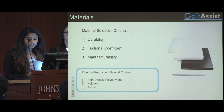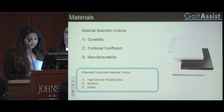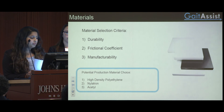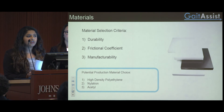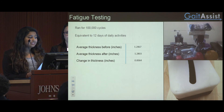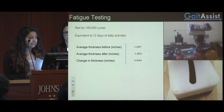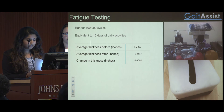Our device is intended for daily use, and so the durability of the front surface is also key. We would require material with a low friction coefficient and probably a material that can be injection molded. At the moment, our three contenders for manufacture are high-density polyethylene, nylotron, and acetyl. We ran some fatigue testing on a device made out of high-density polyethylene. It ran for 100,000 cycles, equivalent to about 12 days of daily activities, and here are some preliminary results.